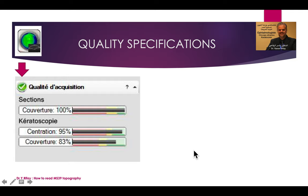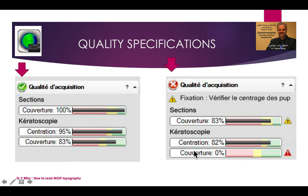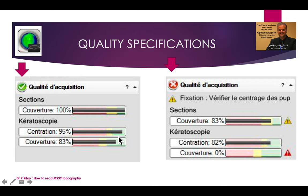We should start by quality specification. We cannot use or read captures or maps if the quality is bad. In this case the quality is bad — the coverage quality of the keratoscope is very low — so we cannot use these maps and we have to recapture. In a good case, the coverage is green for sections, centration of keratoscopy, and coverage of keratoscopy.